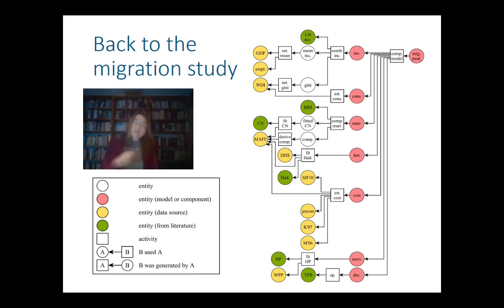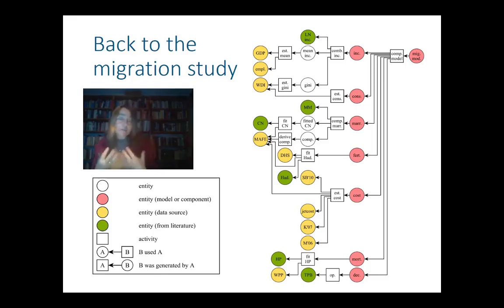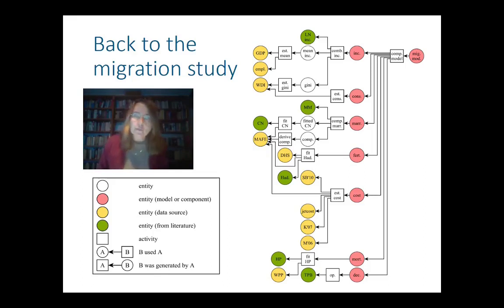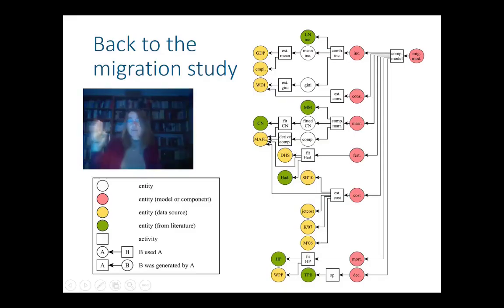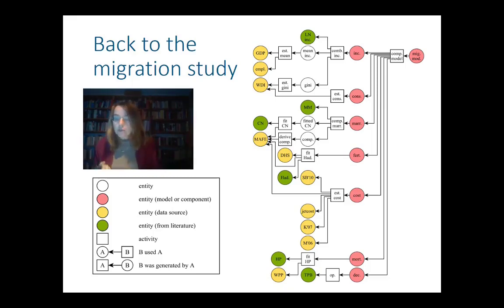The idea is now to apply this more structured, computer-accessible way of describing what we did with our migration model. We are back in the migration study of my colleagues at the Max Planck Institute, and we went through the ODD definition that they did and took it apart. What you see here is that time flows from left to right, and on the right side the result is a migration model.